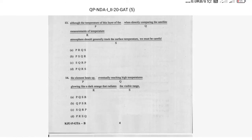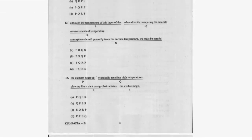Question fourteen is a PRQS sentence ordering question. We have to start with P: 'The element heats up, glowing like a dark orange that radiates in the visible range, eventually reaching high temperatures.' So for question 14, the answer is D.